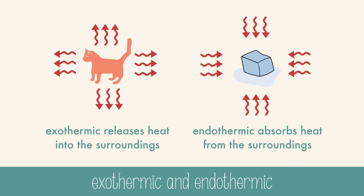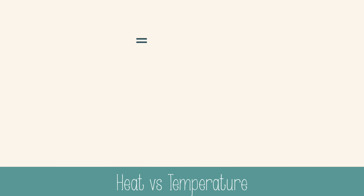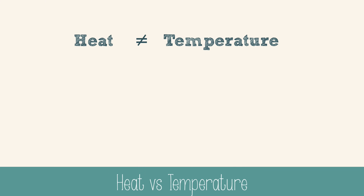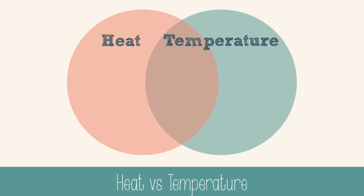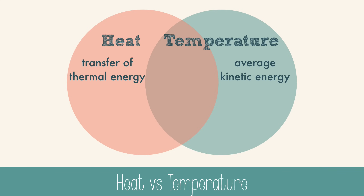Endothermic systems have a positive Q, and exothermic systems have a negative Q. Now, it's important to note that heat and temperature are not actually the same thing. Even though we may use the words interchangeably in everyday conversation, heat is the transfer of thermal energy, whereas temperature is the average kinetic energy of a sample of particles. You can't directly measure heat.